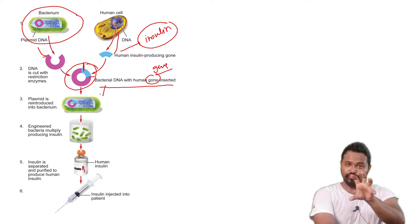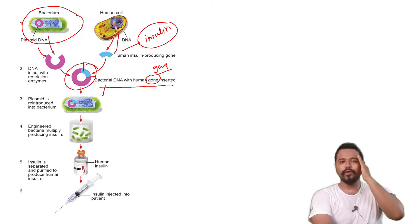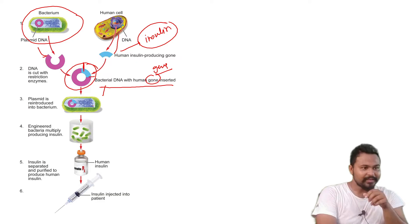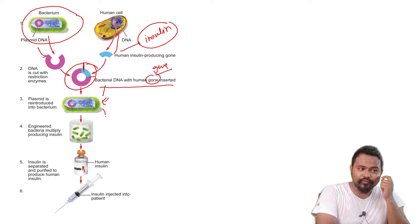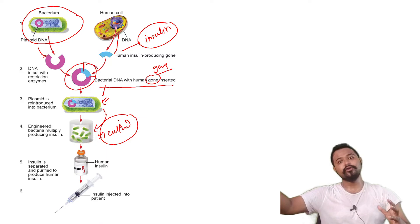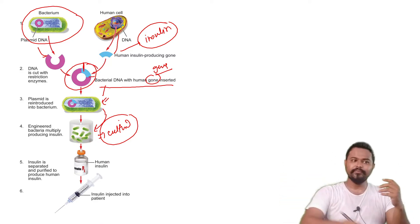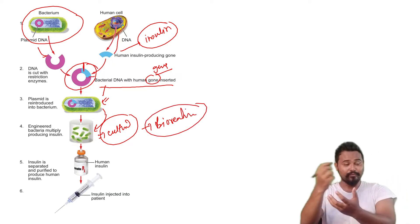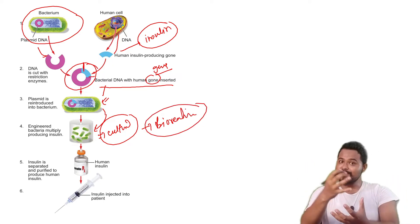This recombinant DNA is inserted into a plasmid, giving bacterial DNA with the human insulin gene. The bacteria are then cultured at the industrial level using bioreactors. After culturing, cell lysis is performed.